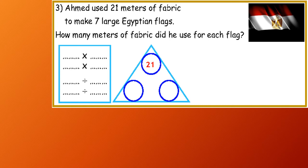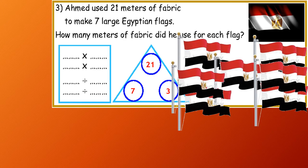I have 21 meters and 7 large flags. So, how many meters did he use for each flag? 7 by 3 equals 21, 3 by 7 equals 21, 21 divided by 7 equals 3, 21 divided by 3 equals 7.